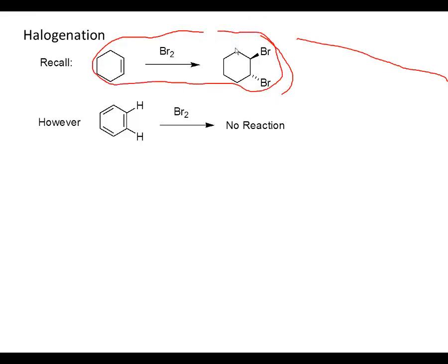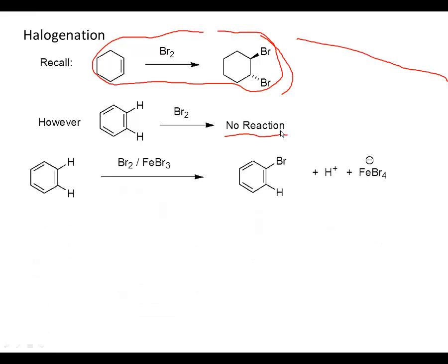This reaction works very well for bromine. But if you just take benzene and treat it with plain ordinary bromine, you get no reaction. This is because the benzene ring is stabilized by aromatic stabilization. However, if you activate the bromine by throwing in a Lewis acid like FeBr3, you can get the reaction to proceed. But you don't get the addition product — you get a substitution product. Byproducts here are H plus and FeBr4 minus.